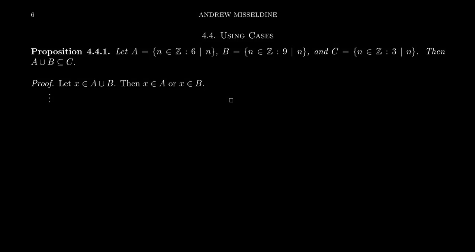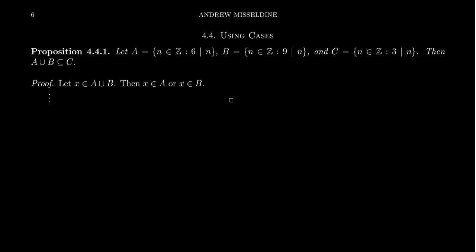In many proofs, it's necessary to consider different cases. For example, suppose we need to prove that the set A union B is a subset of C, where A is all those integers divisible by 6 — that is, multiples of 6 — B is all those integers divisible by 9, and C is all those integers divisible by 3. So how might we go about proving such a thing?